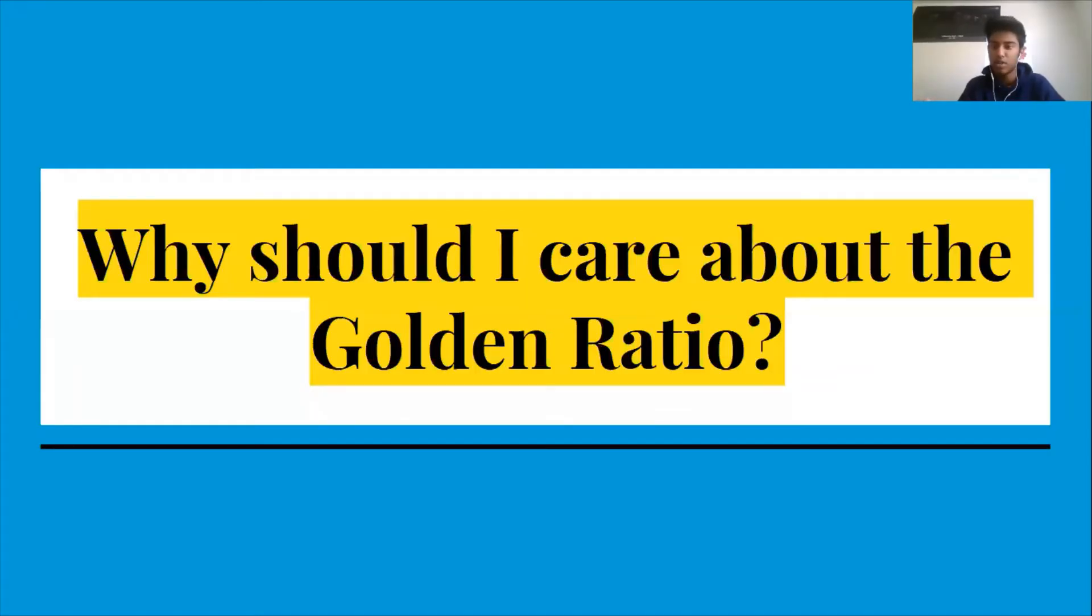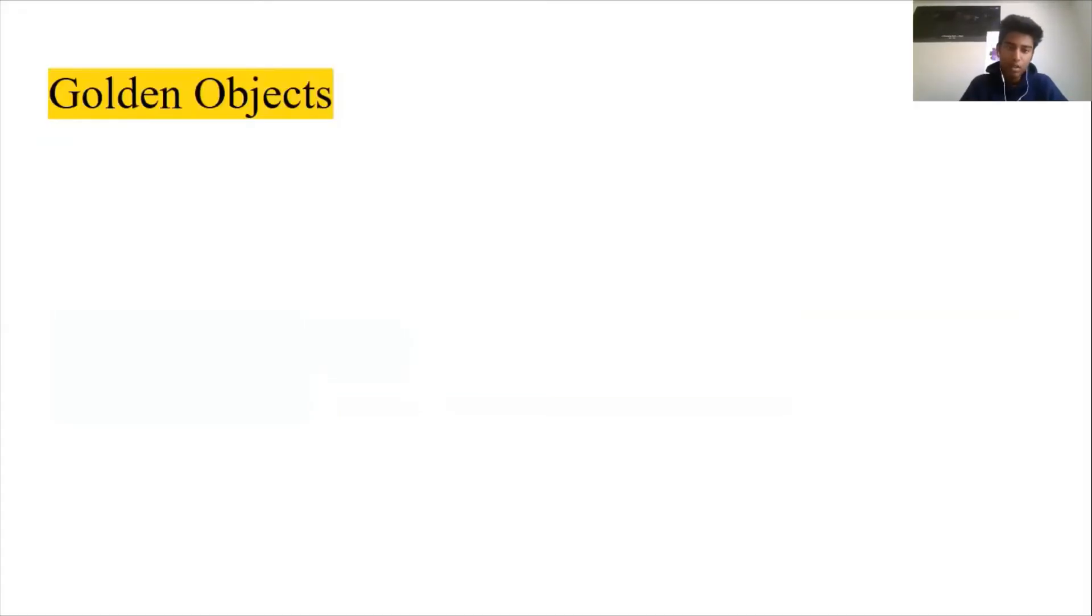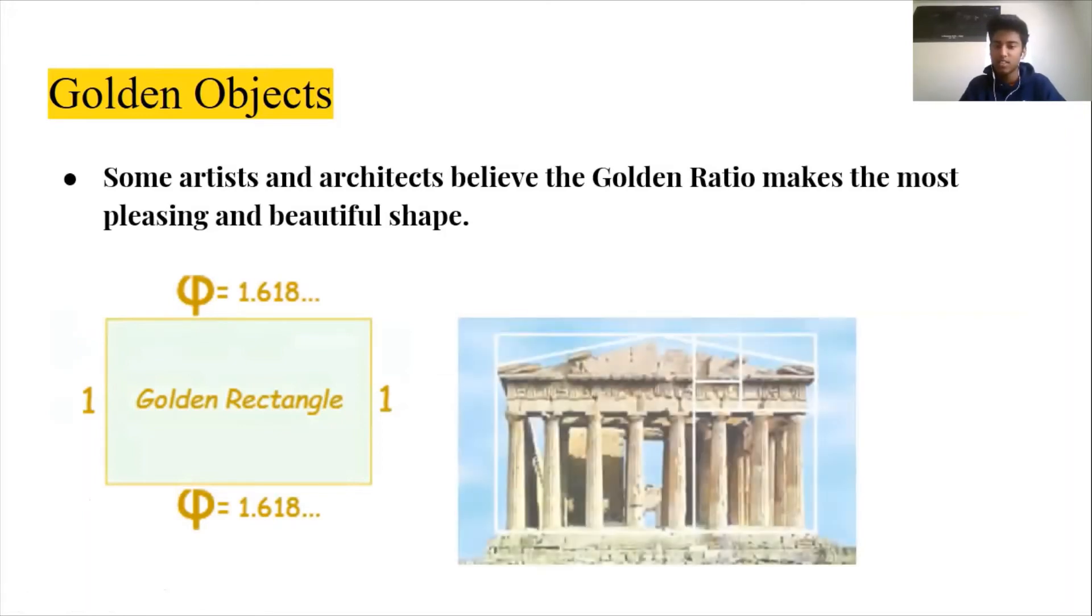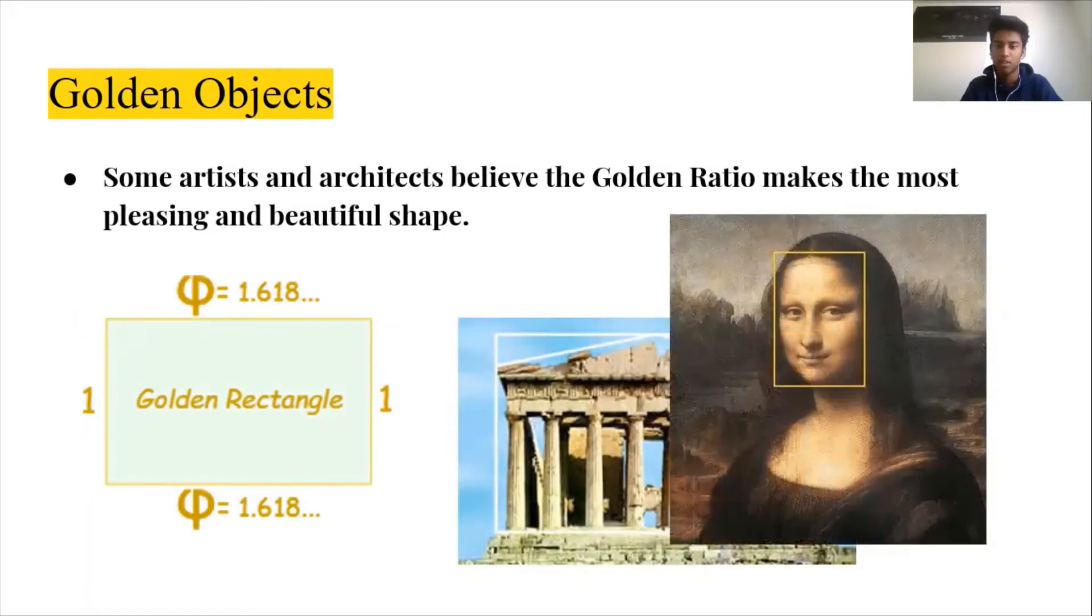So why should you care about the golden ratio? And that's a very good question. So you can actually see golden ratio everywhere around you. Because artists and architects believe that the golden ratio makes the most pleasing and beautiful shapes. For example, the golden rectangle, which has ratios of the width to the length of the rectangle equal to phi itself. And this apparently makes the most pleasing or beautiful shape for a rectangle. And the philosophers found this ratio of the width and the length of this rectangle to be appealing. And you can see this in ancient architecture and ancient art too.